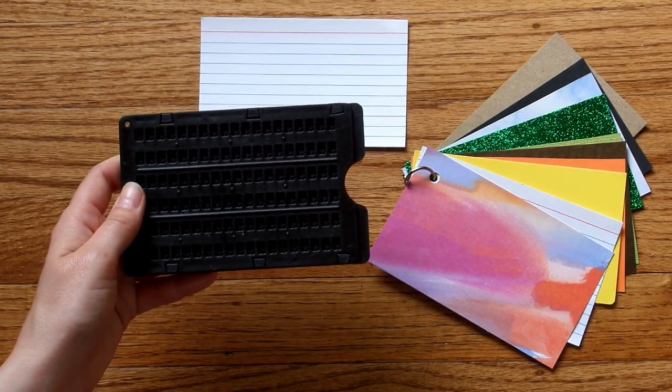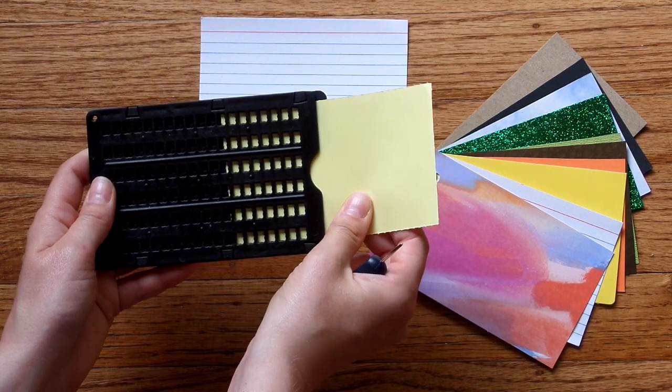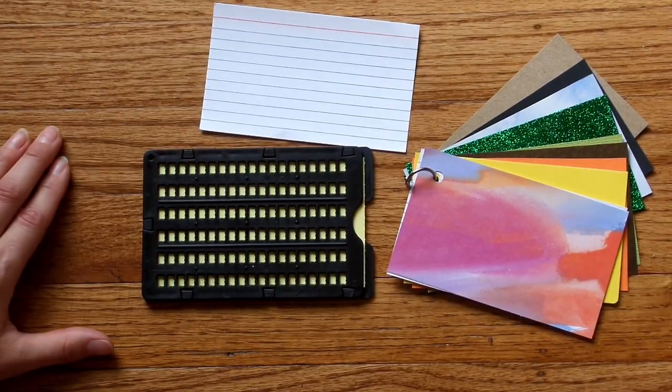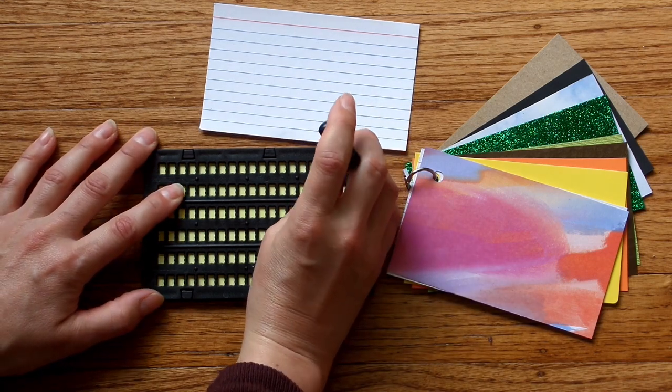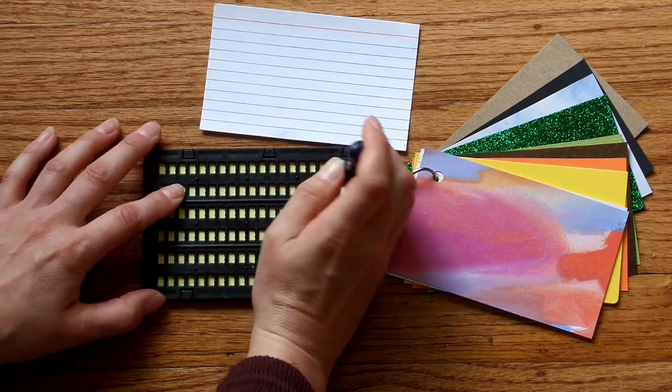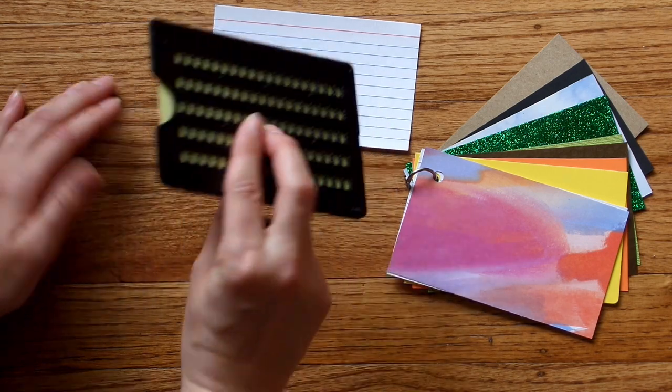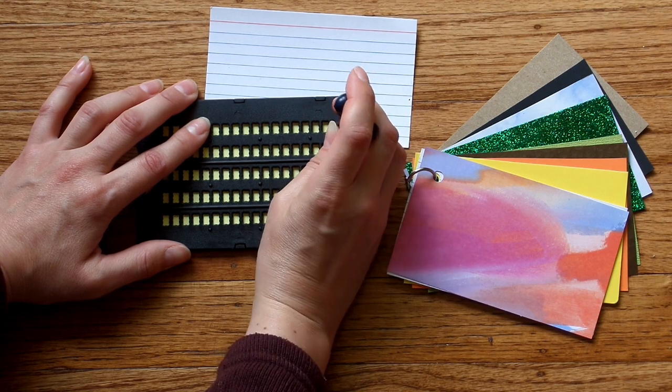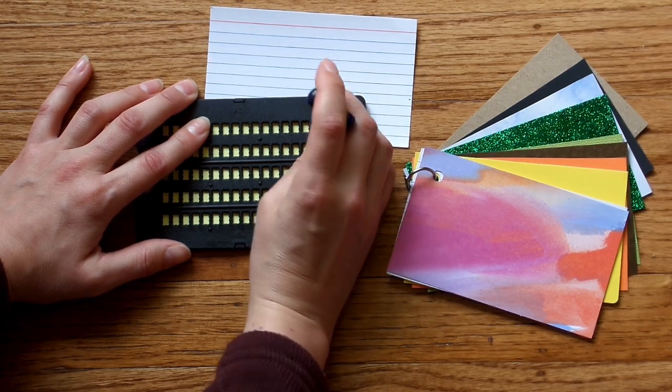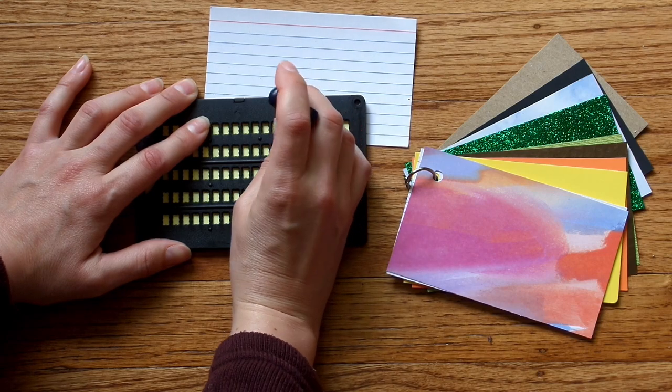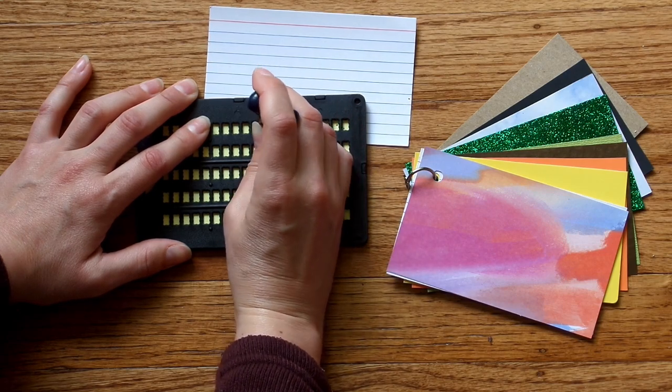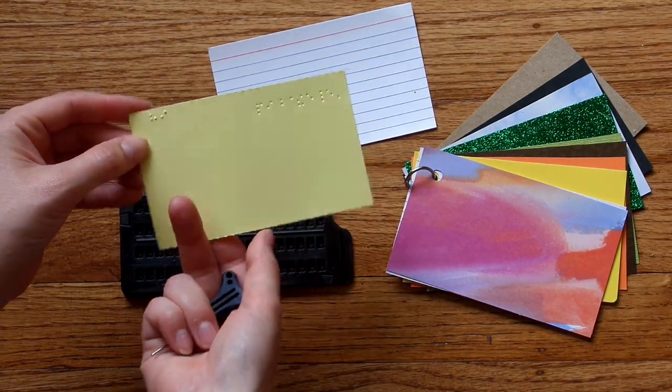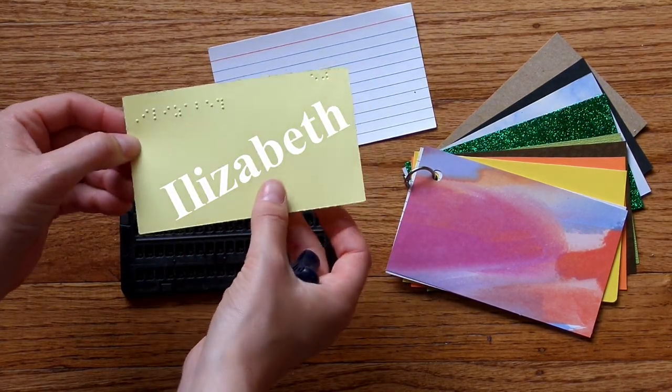So this slate fits a three by five index card. Slide that into the slate. Write all the braille on one side, flip the slate over, and then write some more. On one side, I wrote hi, and on the flip side, I wrote Elizabeth.